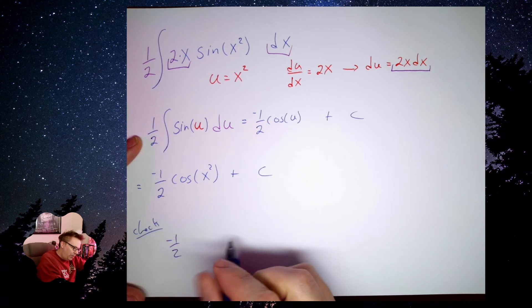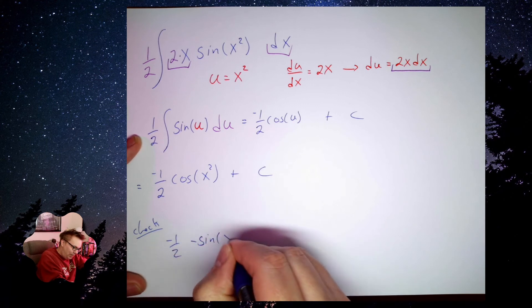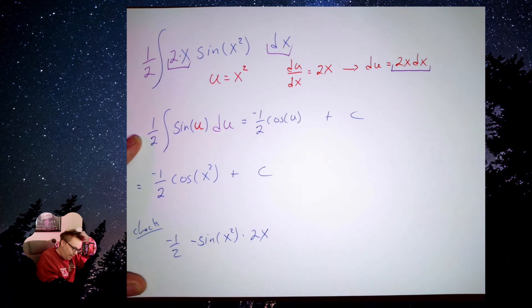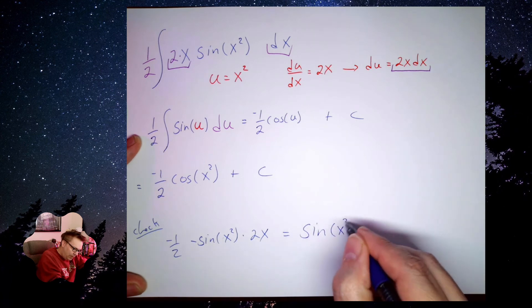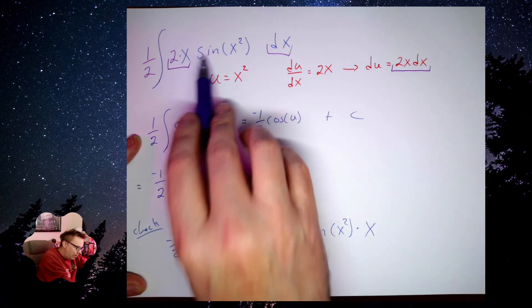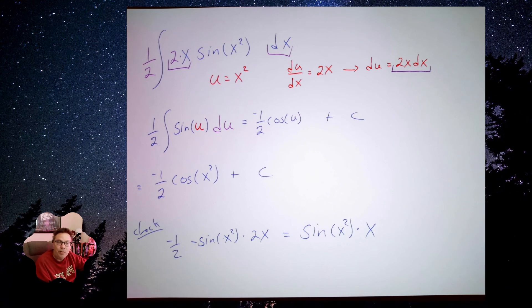I think you can see that this is going to work at this point. The negative one half comes along for the ride. I'm going to take the derivative of the outside, which is negative sine. Leave the inside alone. Multiply by the derivative of the inside. So, the negative signs cancel. The 2 and the 2 cancel. I'm left with sine of x squared times x. And it's just the original problem written in a different order.